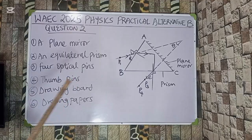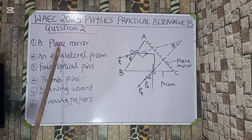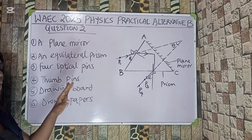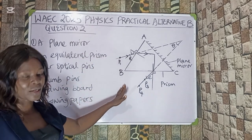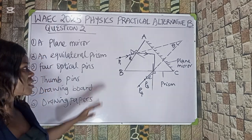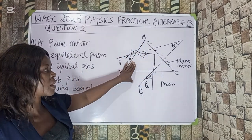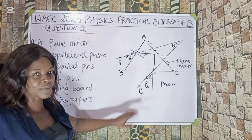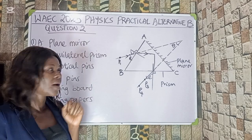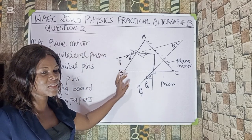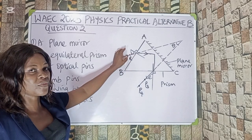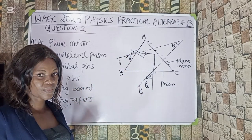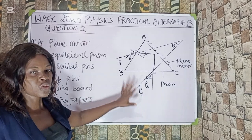Moving to question two, we are asked to provide the following apparatus: a plane mirror, an equilateral prism, four obstacle pins, drawing board, and drawing paper. Using all these apparatus, we are going to look at a diagram involving a plane mirror and a glass prism. I'm going to show you how to perform this task, how to get your angle of incidence, your image, and how to get your angle theta.